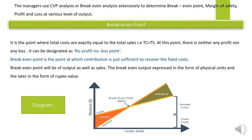Nutshell में: CVP analysis और break-even analysis में profits affected होते हैं with the interplay of cost, volume, and selling price। Managers इन analyses को use करते हैं ताकि वो determine कर सकें break-even point, margin of safety, and profit and loss at various levels of output।